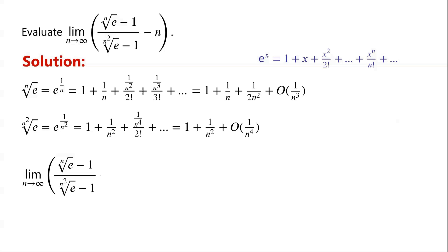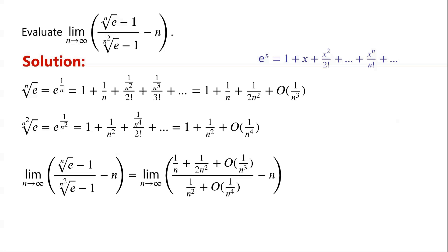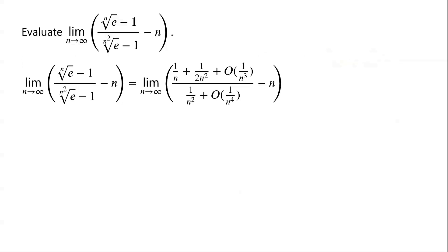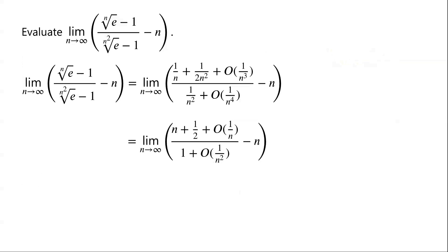Then the original limit can be written as the limit as n tends towards infinity of: 1 over n, plus 1 over 2n squared, plus big O of 1 over n cubed, over 1 over n squared, plus big O of 1 over n to the power of 4, minus n. Multiplying the numerator and denominator of the fraction by n squared, the fraction becomes n plus a half, plus big O of 1 over n, over 1 plus big O of 1 over n squared.